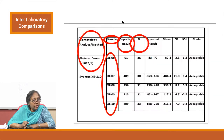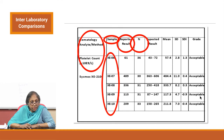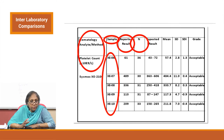This is another EQAS report clip, for a hematology analyte — specifically platelet count. It shows the analyte name, unit, sample details (5 samples in one EQAS cycle), reported results, N (total number of labs participating), expected results, mean, SD, SDI, and acceptability. These are the minimum attributes you should check when reviewing an EQAS program report.